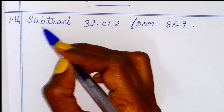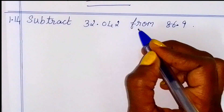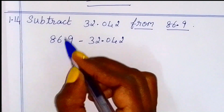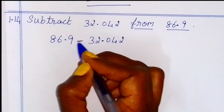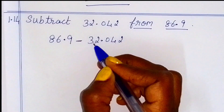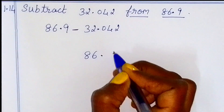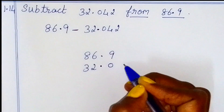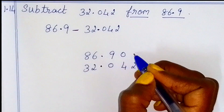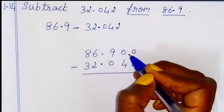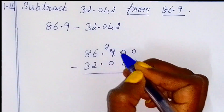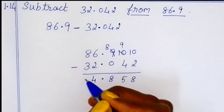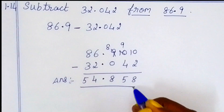Subtract 32.04 from 86.9. So first, 86.9. 32.04 subtract. Whole number 86 is greater, 32 is the smaller number. Decimal point first, place whole number 32. Decimal point starts at 0.4. Now separate, then borrow from here. Less 1, less 1 — gives 2 and 8. Decimal point, 4 and 5. So this answer is 54.858.